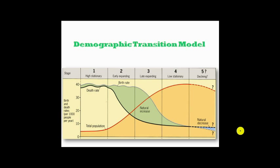Looking at the demographic transition model chart, we can see the plots on the X and Y axis showing the total population, birth rate, death rate, and the various stages. In Stage One, the High Stationary stage, the birth rates and death rates are high and cancel each other out — they are very nearly equal. Because of this high birth rate, there is a high proportion of young children in the population. Since the birth rate and death rate are very close together, there is a very small growth rate and the population tends to grow very slowly.